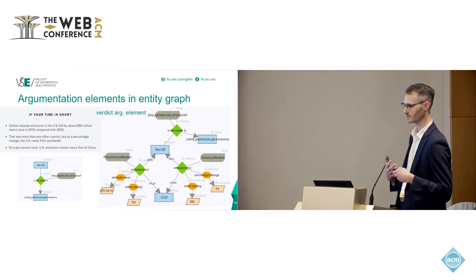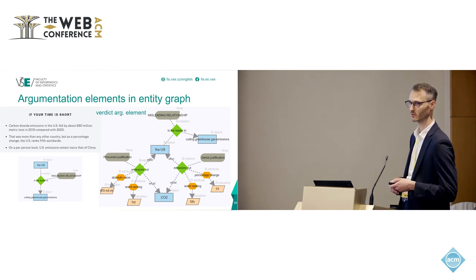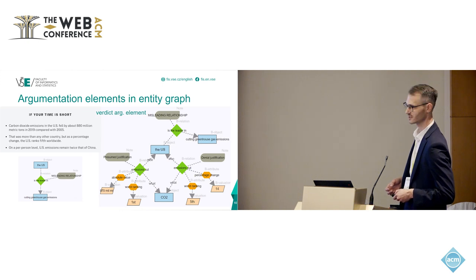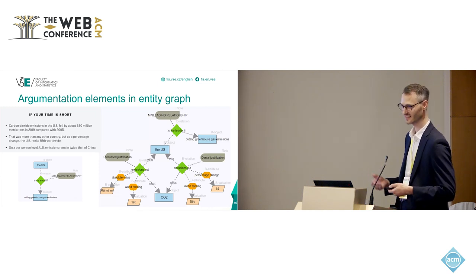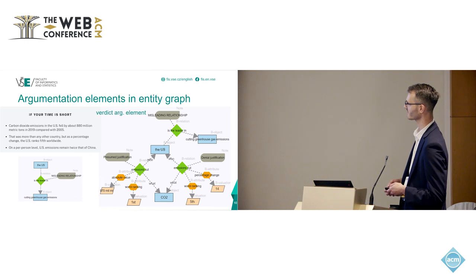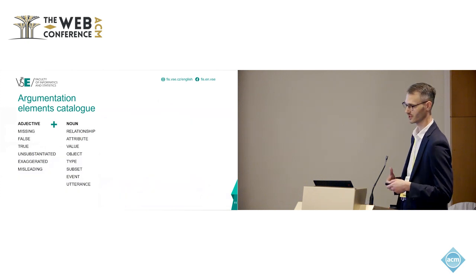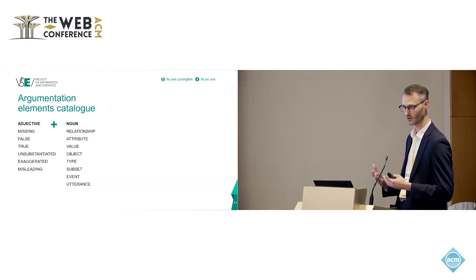We worked on the representation because we thought textual representation is not enough and formal representation is maybe too formal. So we came up with something in between — the entity graph in proof notation. For example, in the claim we saw, the US is the leader in cutting emissions. We can model the denial justification: the claim referred to the US being first in cutting emissions, but in absolute values only. That's why it's misleading. If you look at percentage, it's on the fifth rank in the world. We call these auxiliary argumentation elements and verdict argumentation elements, and we work further with verdict arguments and textual snippets.